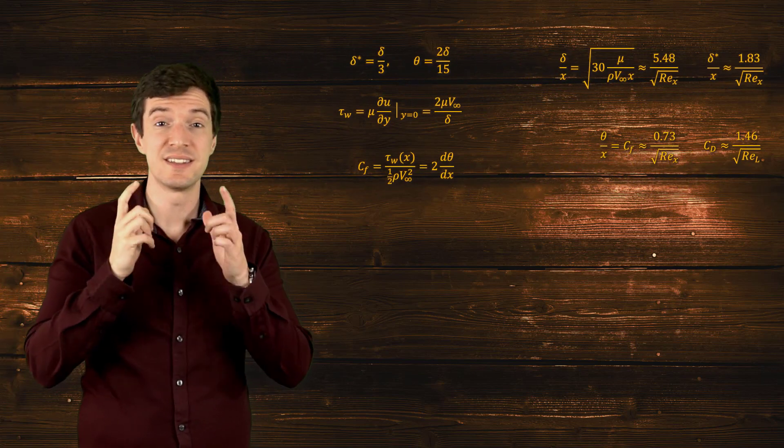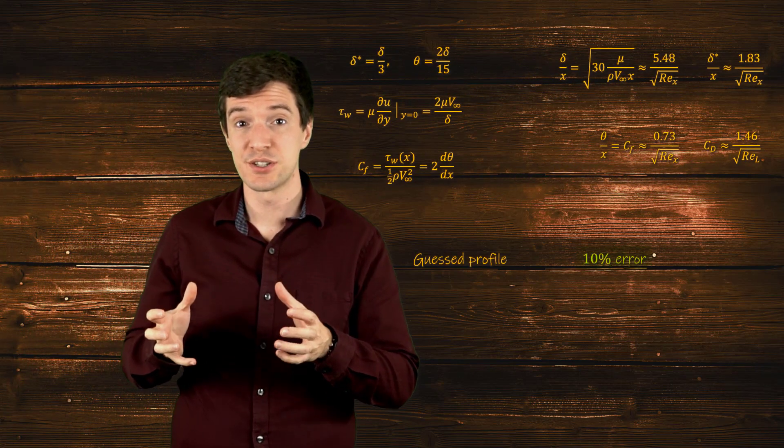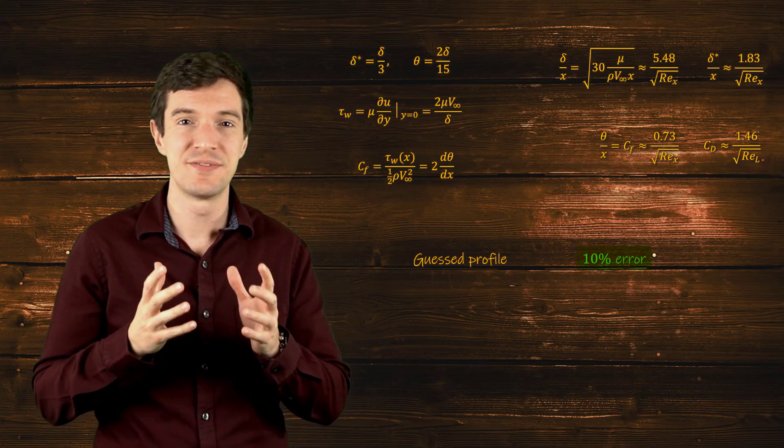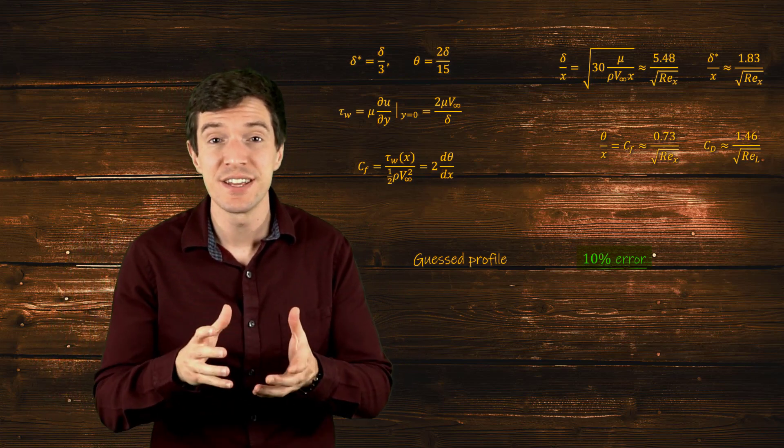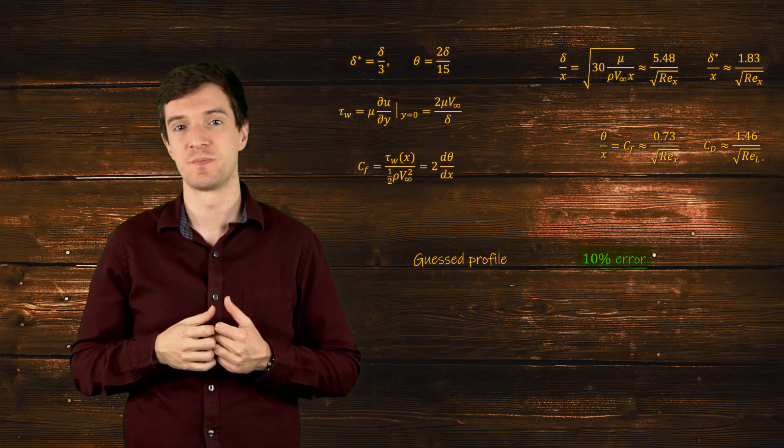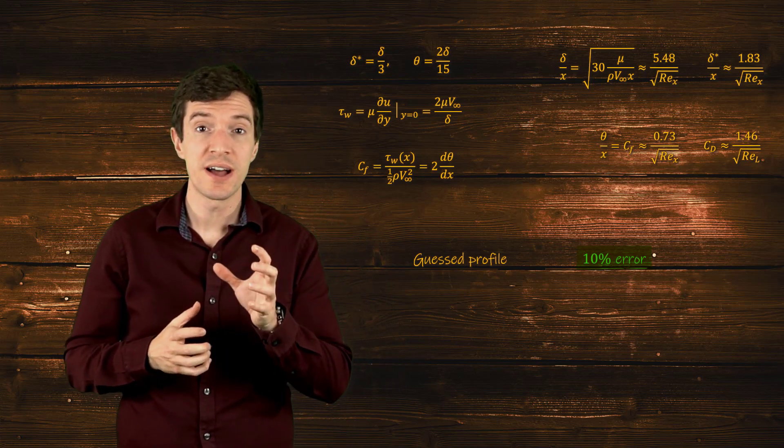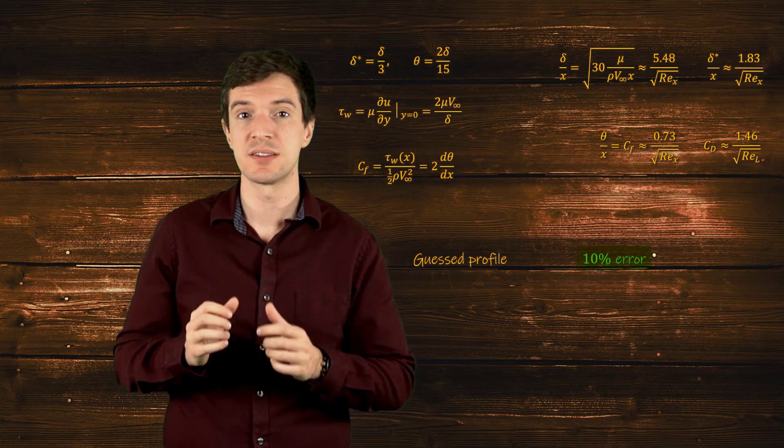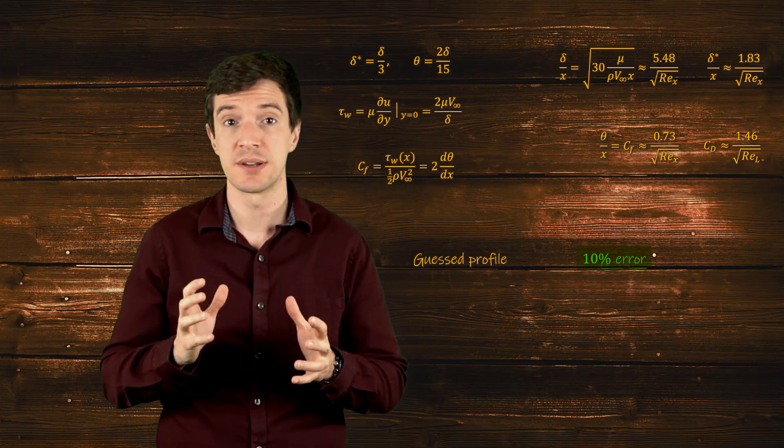Here is the beauty of this analysis. All these expressions are based on a guessed velocity profile and relations obtained using simple integral considerations. And still, they provide results within 10% of the exact laminar boundary layer solution. In addition to that, we can also perform some dimensional analysis and gather additional insight on the boundary layer.